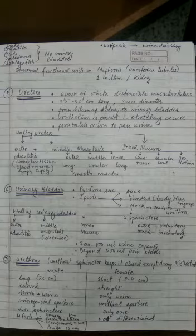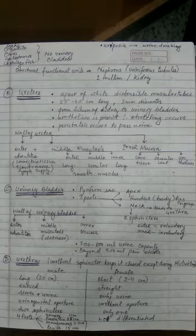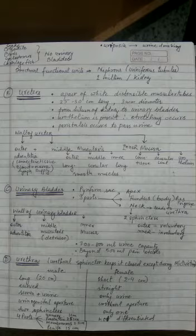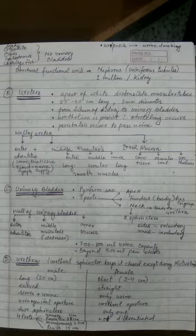We discussed the structure of the bladder - it is pyriform and has three portions: the apex, the fundus or body part, and the neck part. There are two sphincters present in the bladder, the outer is voluntary and the inner is involuntary.